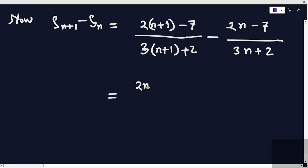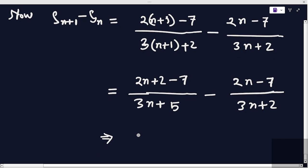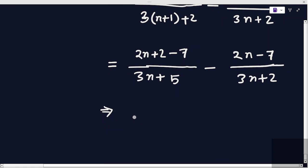This will be twice n plus 2 minus 7 divided by twice n plus 3 plus 2, that means twice n minus 5, minus twice n minus 7 divided by twice n plus 2. Taking LCM, the denominator will be twice n plus 5 into twice n plus 2.